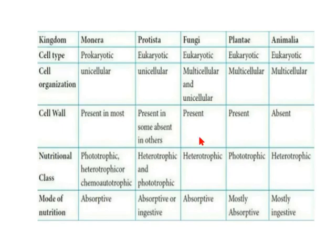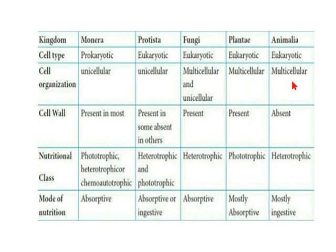This table shows all the differences, allowing you to differentiate the five kingdoms on the basis of cell type, cell organization, cell wall, nutritional class, and mode of nutrition. Only Kingdom Monera is prokaryotic; the rest are all eukaryotes. Monera and Protista are unicellular; Fungi can be unicellular or multicellular; Plants and Animals are both multicellular. Cell walls are present in Monera; in some Protista with plant-like characteristics like Euglena and Chlamydomonas; absent in animal-like protists.